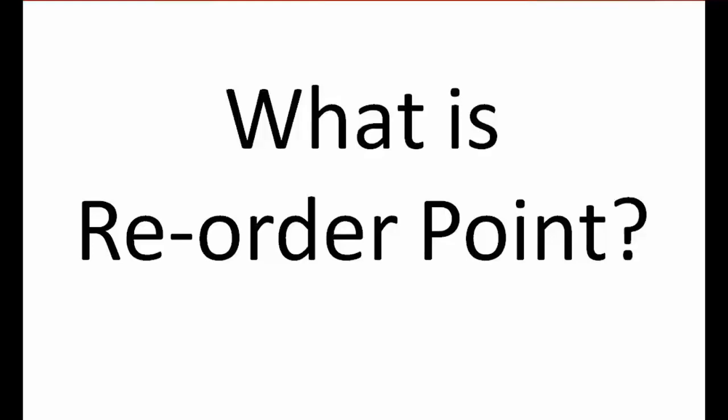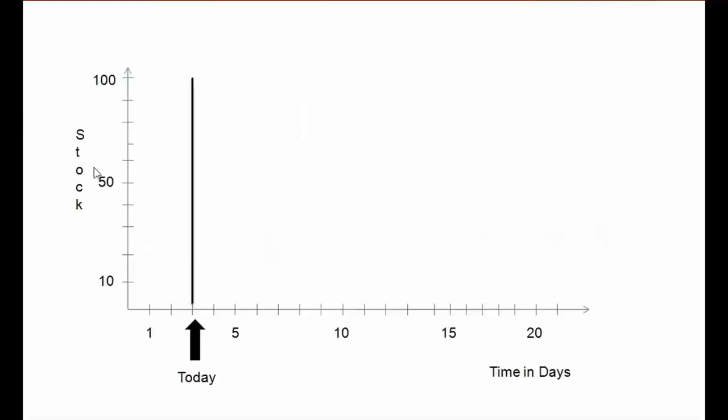I will explain this with an example. Imagine that you are building a new house, and every day you need 20 bags of cement — that is your consumption on a day-to-day basis. So in the graph you can see stock: today we have 100 pieces of stock, and the consumption per day is 20 pieces.